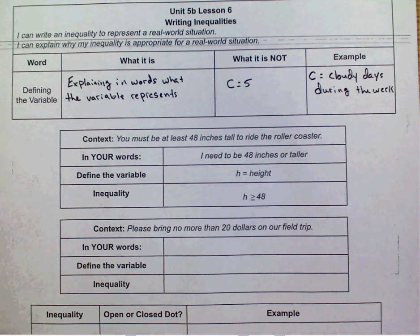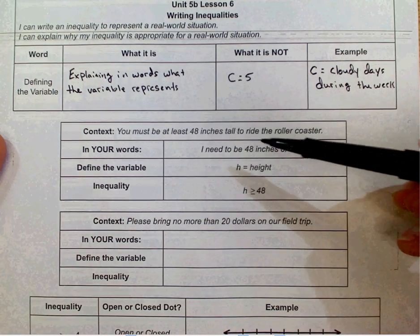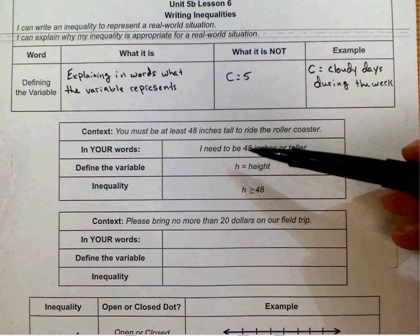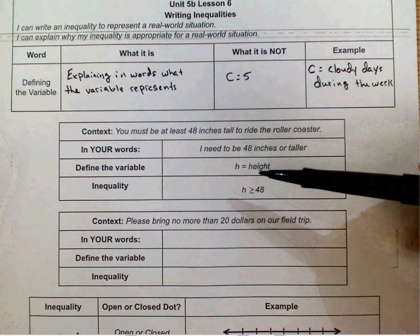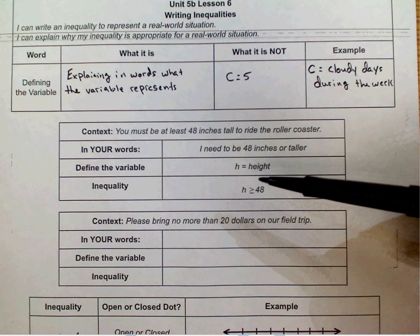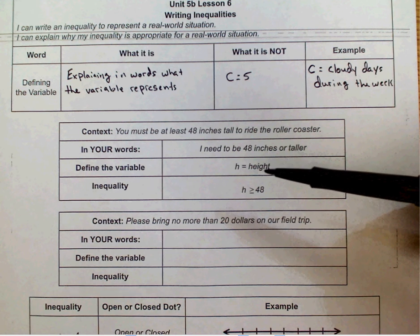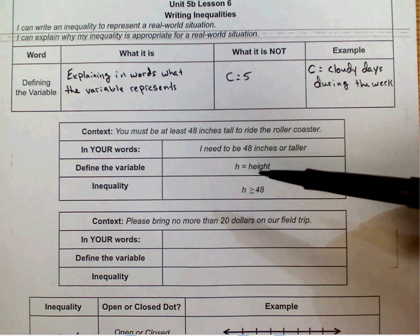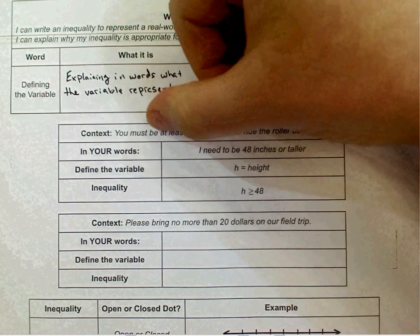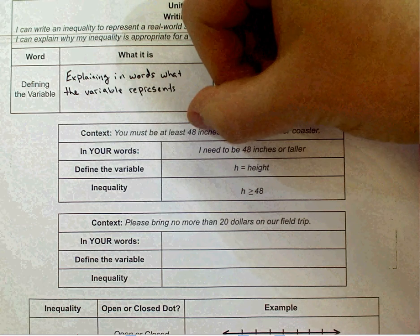So what we're going to focus on today is taking our vocabulary and pulling all of that from our word problem. So in actual English, you must be at least 48 inches tall to ride the roller coaster. So when we look at that, what words or phrases would tell us which inequality it would be? At least 48 inches tall to ride the roller coaster.